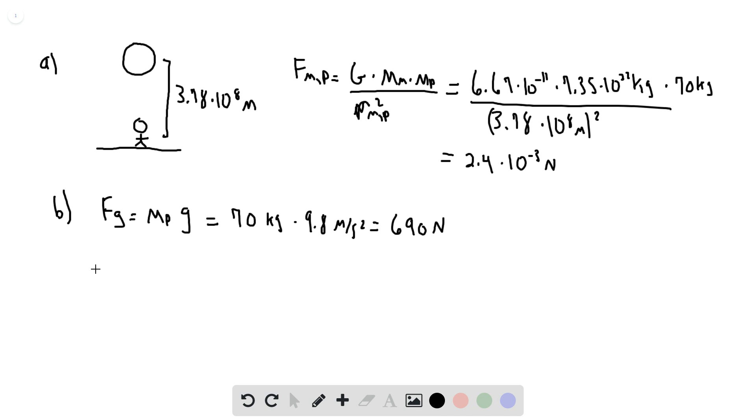And we're asked to directly compare this with the force of the Moon, so maybe we'll take the ratio. So the force that the Moon exerts on the person, divided by the force that the Earth exerts on the person. So that's just Fg that we just found. So we have 2.4 times 10 to the minus 3 newtons, and then 690 newtons. And so when we evaluate that, we find 3.5 times 10 to the minus 6.